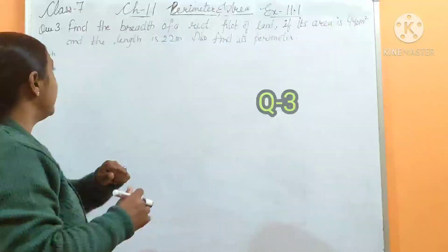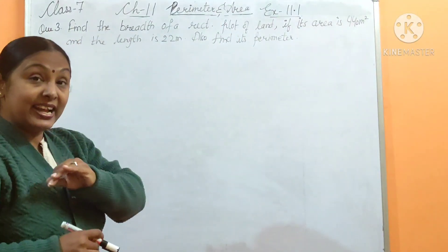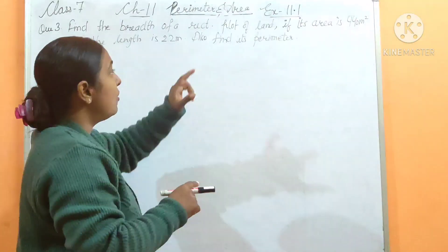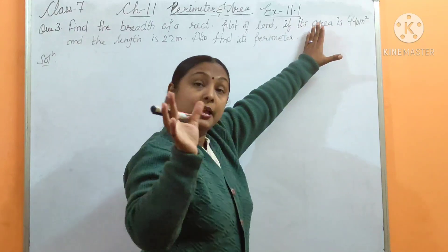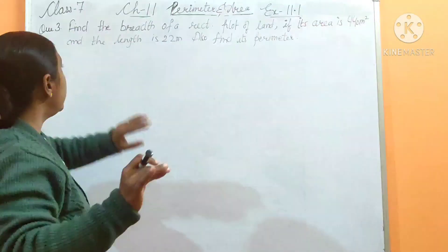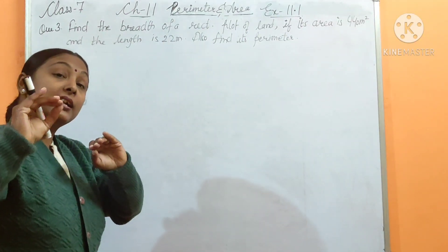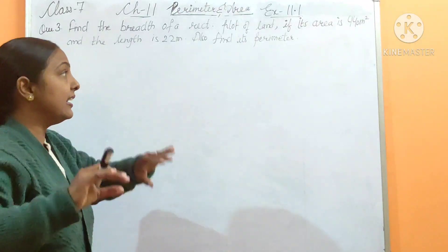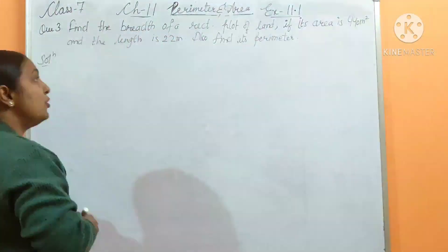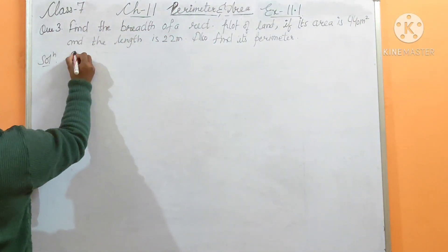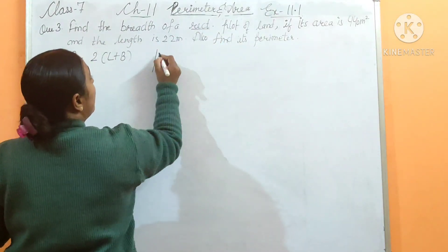Let's come to the third question. Find the breadth of a rectangle. For a rectangle, what do we know? We know the length and area. The given area is 440 meter square and the length is 22 meters. Length is given, area is given, and we need to find the perimeter. The perimeter formula is 2(L + B) because we have a rectangular plot.